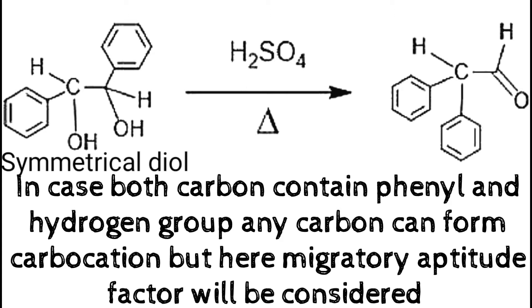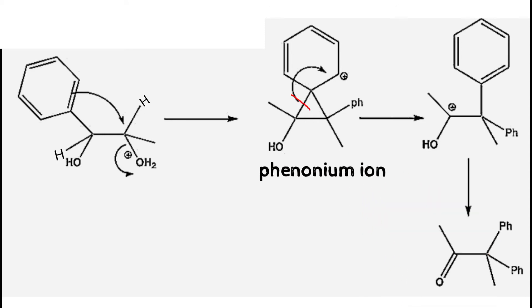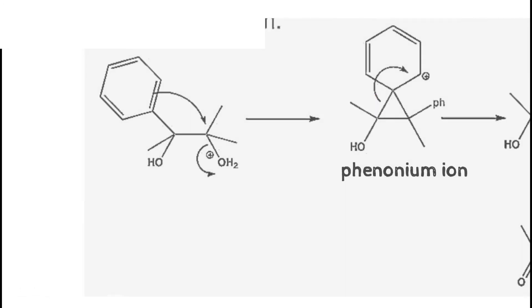Now both carbons may look equivalent, but when it comes to migratory aptitude, phenyl will migrate. In the situation where both hydrogen and phenyl are attached, phenyl migration is much better. We know that OH is a poor leaving group — it will not be removed easily — so we need to provide backpush, which the hydrogen group cannot provide, but the phenyl group can.